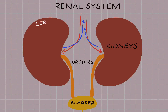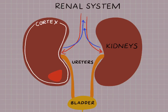Now we'll take a look at the anatomy of the kidney itself. There's the outer granular region called the cortex, and then a series of renal pyramids. The renal pelvis is what houses the network of veins and arteries that feed blood flow to and from the kidney.